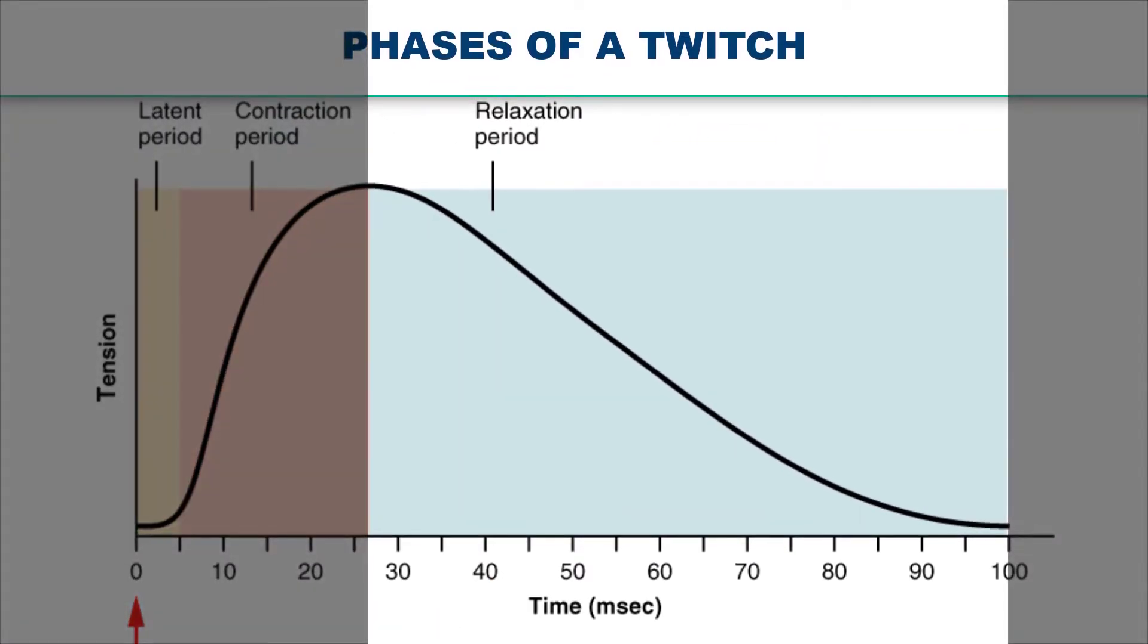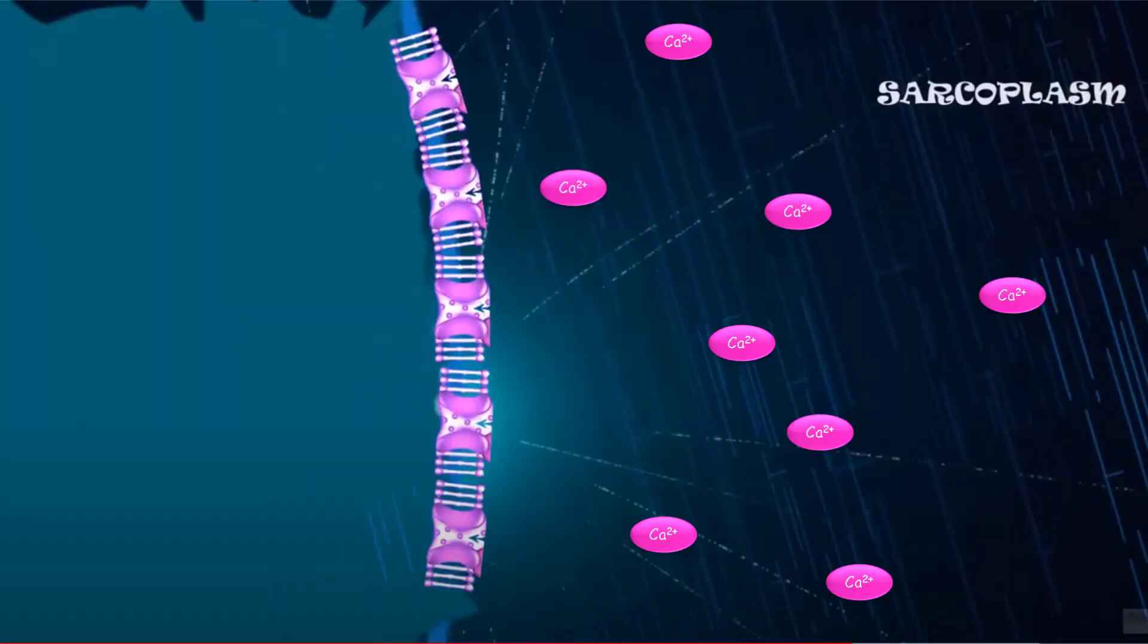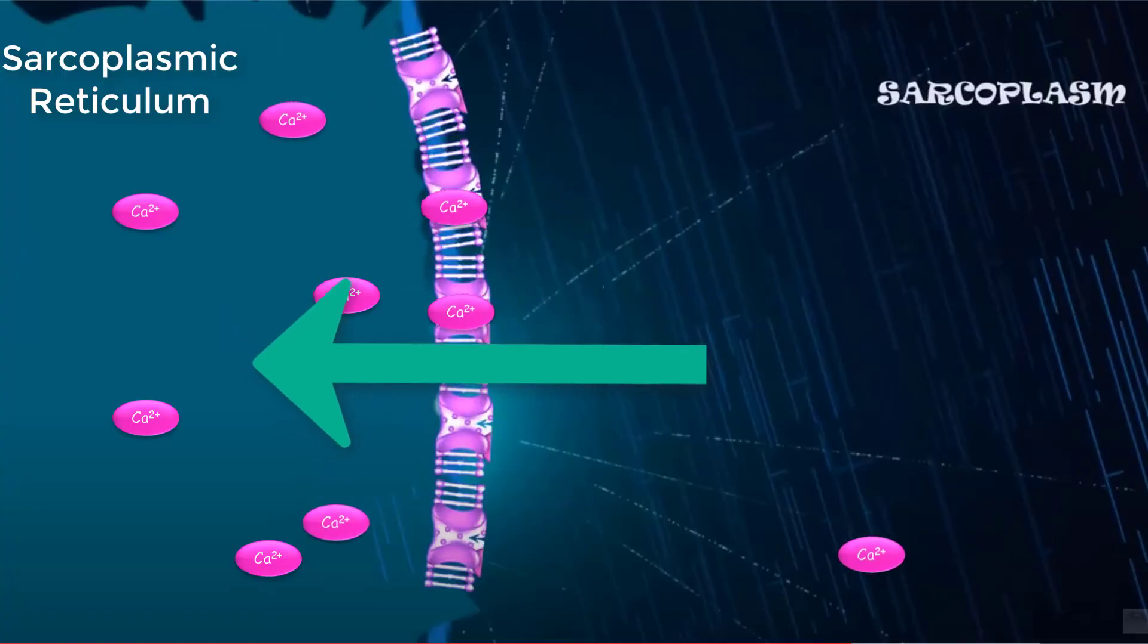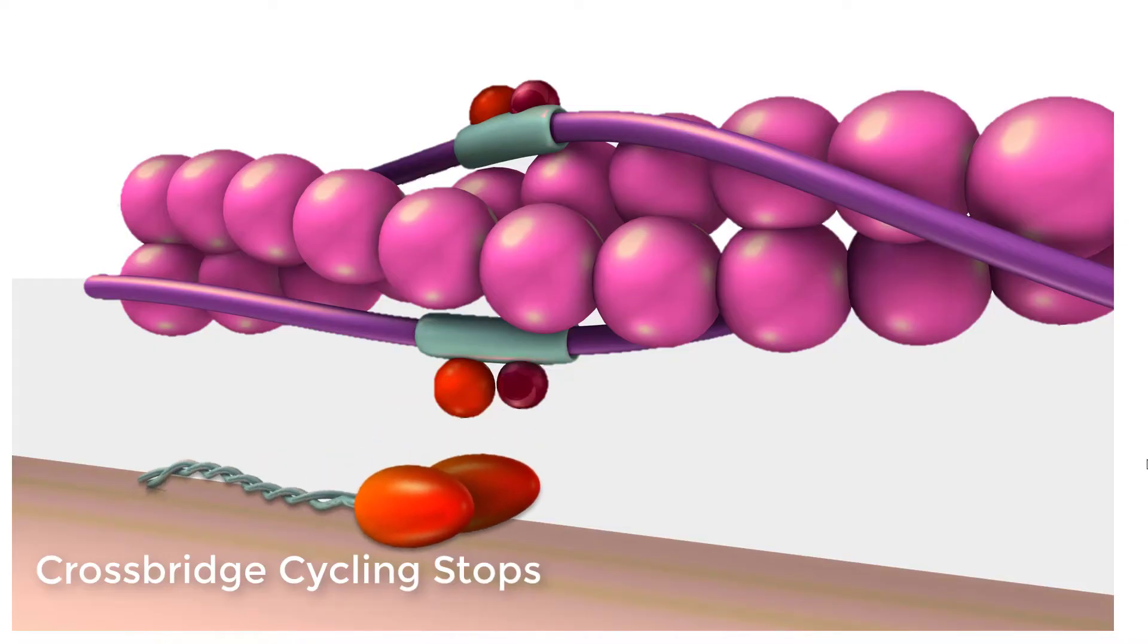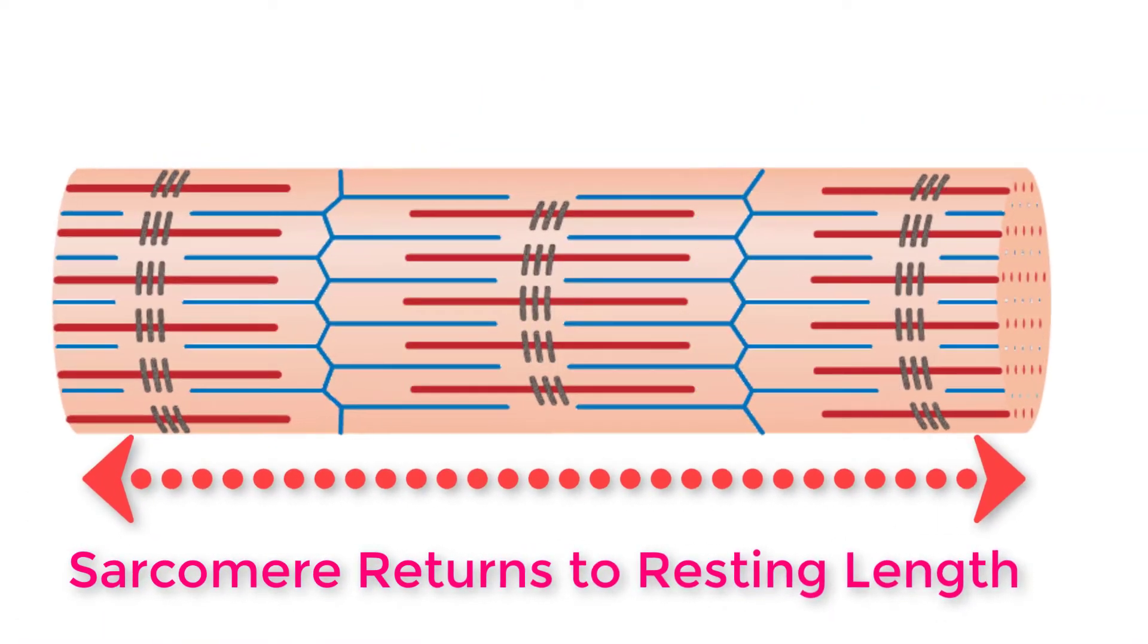In the relaxation phase, tension decreases as contraction stops. Calcium ions are pumped out of the sarcoplasm back into the sarcoplasmic reticulum, and cross bridge cycling stops. This returns the muscle fiber to its resting state.